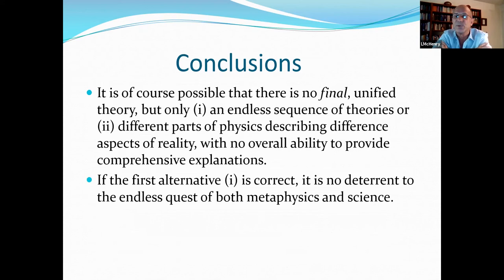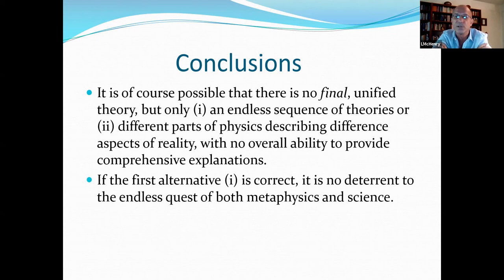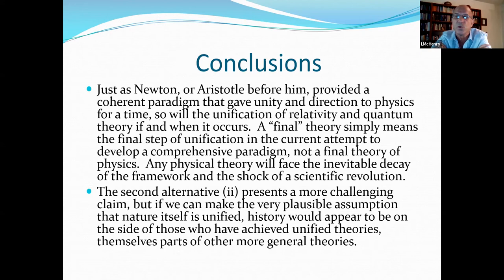It is, of course, possible that there is no final unified theory. But perhaps one, an endless sequence of theories, or two, different parts of physics describing different aspects of reality with no overall ability to provide comprehensive explanations. If the first alternative is correct, it seems to me to be no deterrent to the endless quest of both metaphysics and science. Just as Newton and Aristotle before him provided a coherent paradigm that gave unity and direction to physics for a time, so will the unification of relativity and quantum theory if and when it happens. A final theory simply means a final step of unification in the current attempt to develop a comprehensive paradigm, not a final theory of physics.